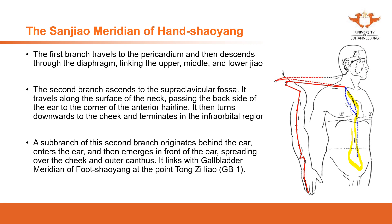The second branch ascends to the supraclavicular fossa and travels along the surface of the neck, passing the back side of the ear to the corner of the anterior hairline. It then turns down to the cheek and terminates in the inferior orbital region.